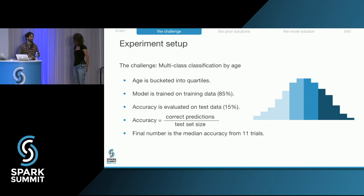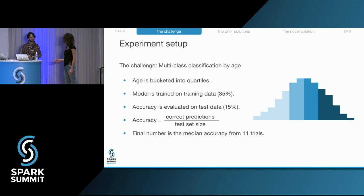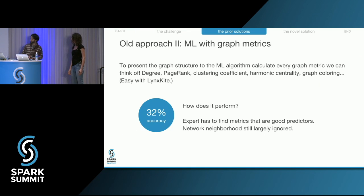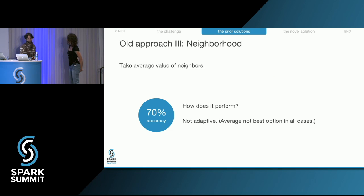If we had better attributes like a person's favorite band, that would help. But we could do much better by using the graph data as well. One idea is to take the average of the neighborhood — for each profile, look at the neighbors and take the average of the known age classes. That gives 70% accuracy.